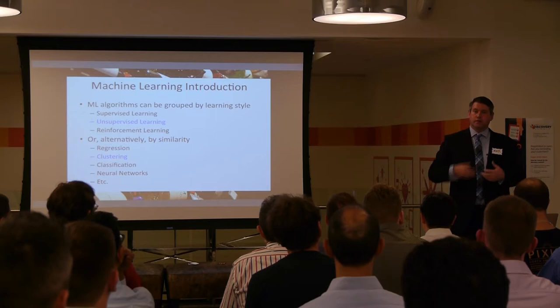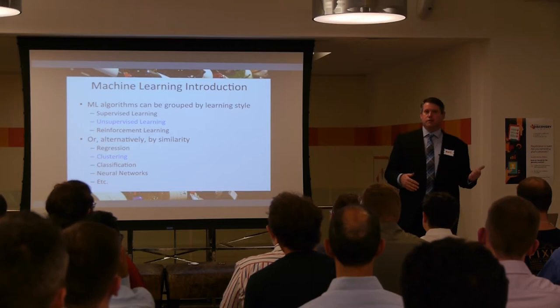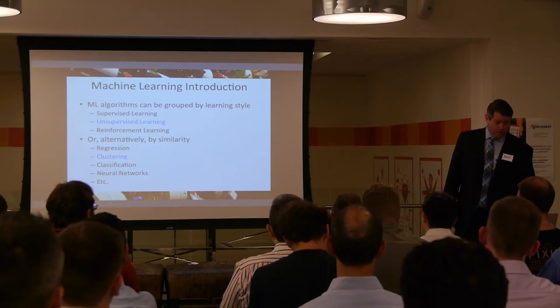Another way of grouping machine learning is by the similarity of the algorithms and what they're trying to accomplish: regression, linear logistic regression is very common. Clustering and classification, neural networks, and many different kinds of AI are out there — self-driving cars, for example.